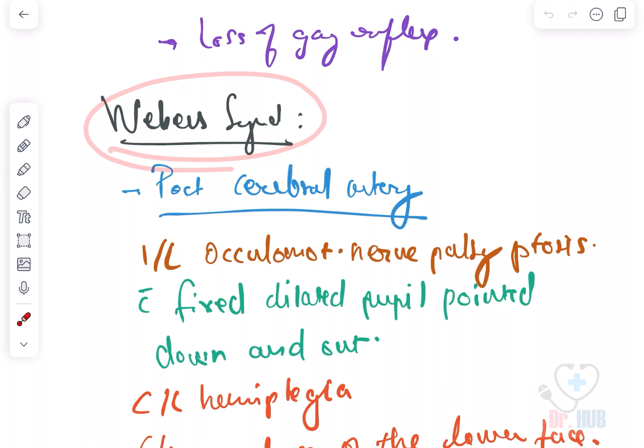Moving on to Weber syndrome. Weber syndrome involves the posterior cerebral artery. There is ipsilateral oculomotor nerve palsy, ptosis with fixed dilated pupil pointed down and out.